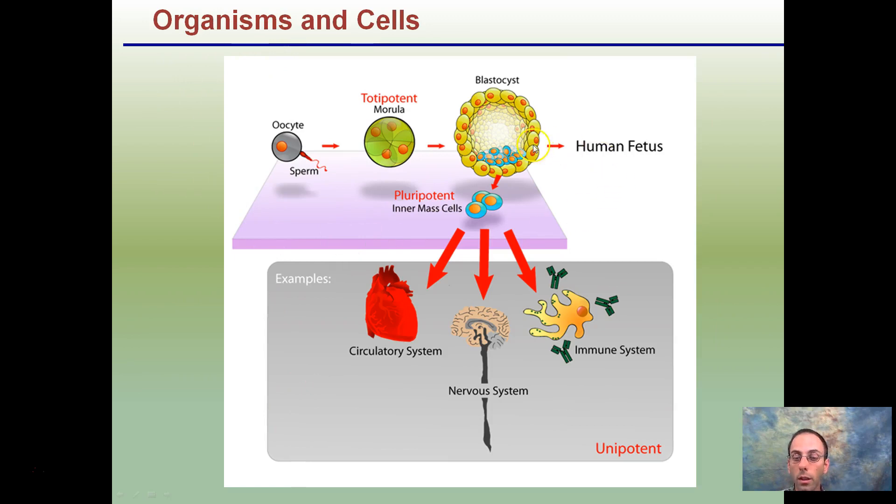Organisms and cells give an idea of just kind of how things come about. We have our sperm and egg here, very small single celled, going to our larger human fetus. We're getting our kind of pluripotent cells or massive cells. And then those can come together to form these circulatory systems.